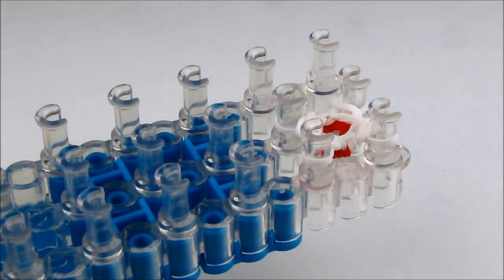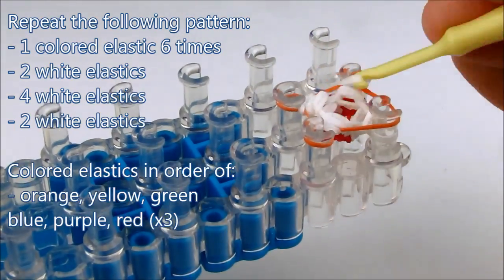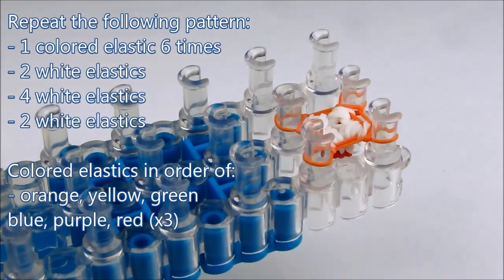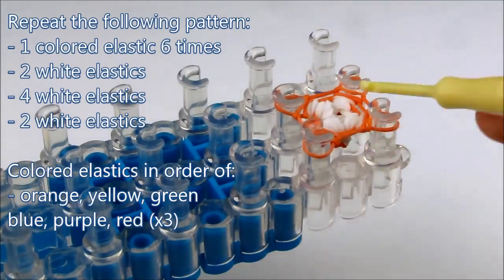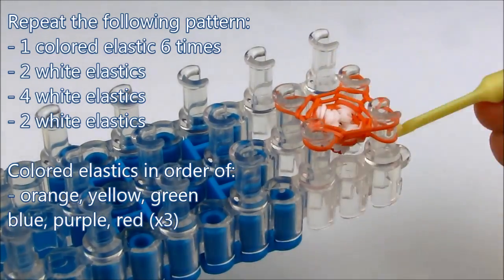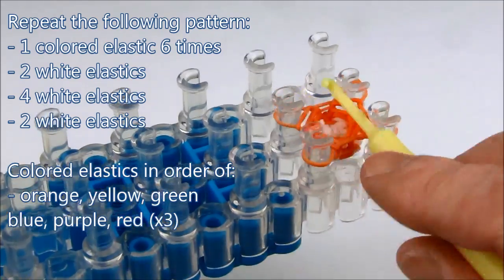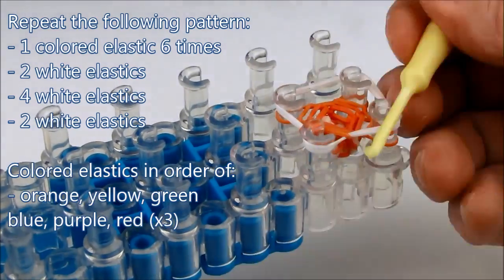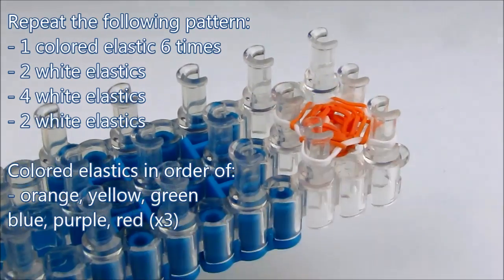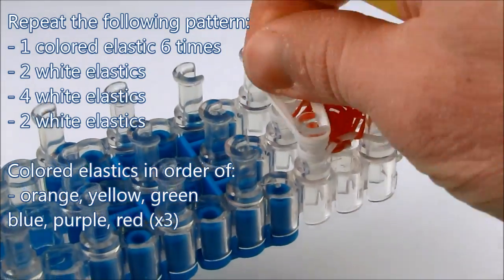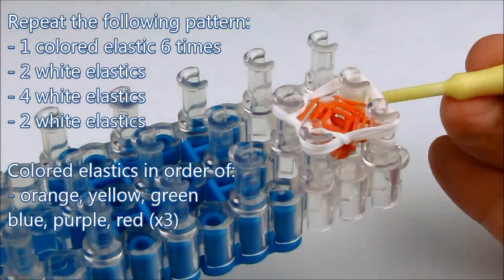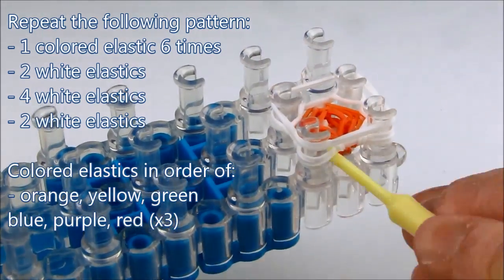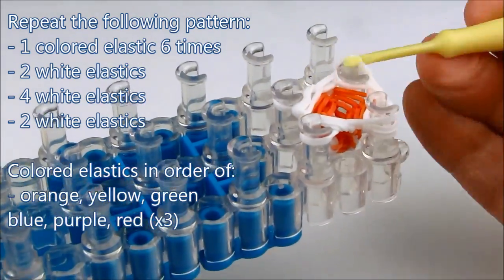And we want to repeat the same process for the rest of the elastics that we have. So we put on colored elastics one at a time until we have six of the colored elastics on. Then we want to put two white elastics on followed by four white elastics and two white elastics. And each time we want to loop all of those elastics in one shot.